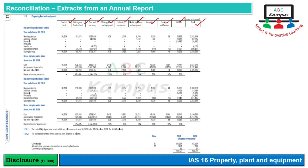Ye abhi complete disclosure nahi hai — 4th and 5th Schedule of Companies Act 2017 ke mutabiq kuch aur disclosures bhi hote hain, disposal se related bhi aur uske ilaawa bhi. Comparative information bhi di jati hai — ek saal ki aur comparative ki information bhi. Is basis par ek disclosure kaafi huge aur detailed ban jaata hai. Exam mein normally 2-3 classes of assets ke liye disclosure pucha jata hai.